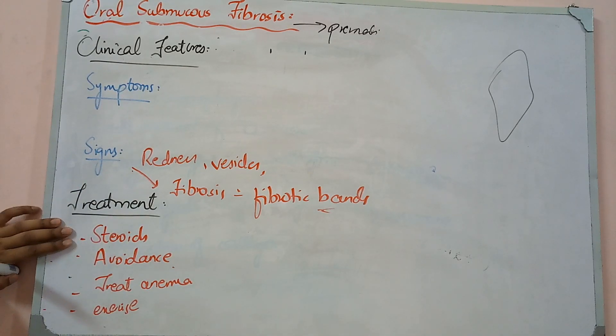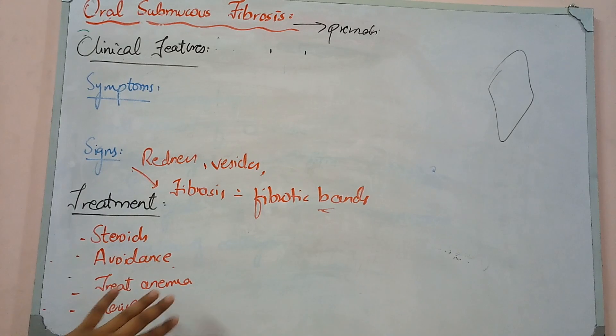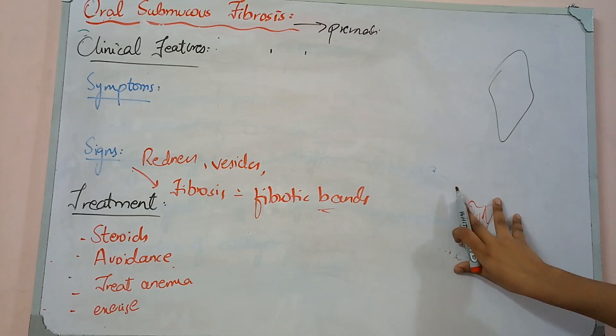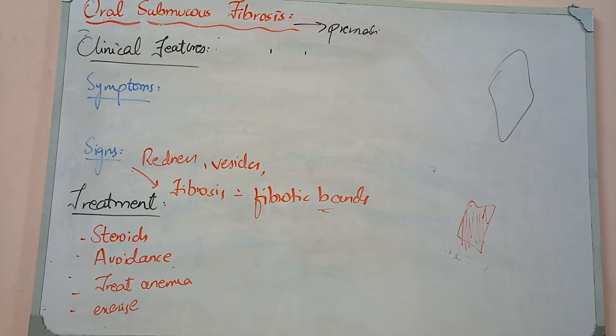Treatment includes steroids because it has autoimmune nature. Address risk factors like smoking or areca nuts. If patient has anemia or vitamin deficiency, treat that, such as megaloblastic anemia. Do jaw opening exercises to prevent jaw locking. For surgical treatment, use different grafts and flaps in areas where fibrosis has developed or where medical treatment has failed, placing grafts in affected areas.